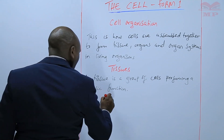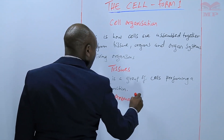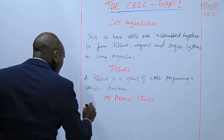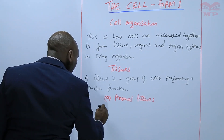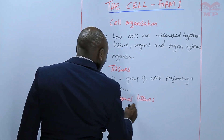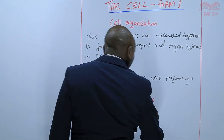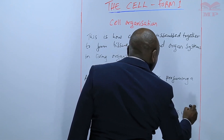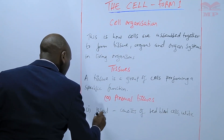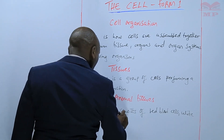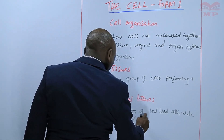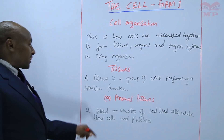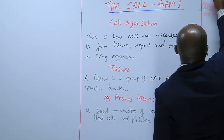We have animal tissues. In animal tissues, we have blood, which consists of red blood cells, white blood cells, and platelets. All those are blood cells — they are cells that make the tissue that we call blood.